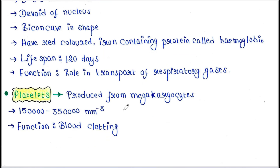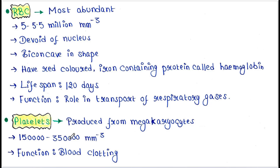Platelets are produced from megakaryocytes. Abundance: 1,50,000 to 3,50,000 per millimeter cube. Function: blood clotting. So this is all about today's lecture. I hope you liked it — thank you for watching.